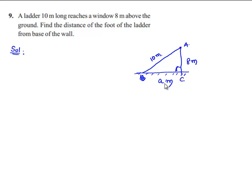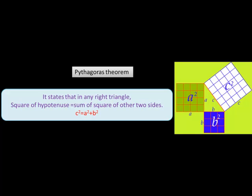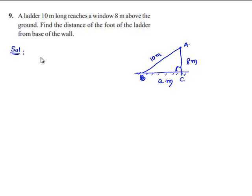We know that from Pythagoras theorem, hypotenuse squared is equal to the sum of squares of the other two sides. We can say AB squared is equal to BC squared plus AC squared.